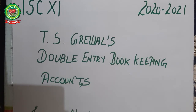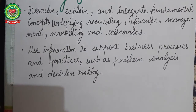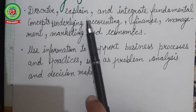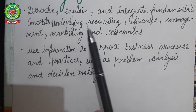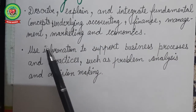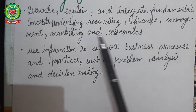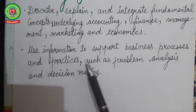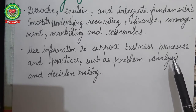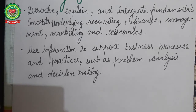If you have thorough knowledge of those terms right now, you will be able to understand them properly in upcoming chapters. We are following T.S. Garival's Double Entry Bookkeeping. The learning objective of Chapter 2 is to describe, explain, and integrate fundamental concepts underlying accounting, finance, management, marketing, and economics. These accounting terms are not only limited to accounts but relate to all these fields. Once these terms are clear, business processes like problem analysis and decision making become easy.